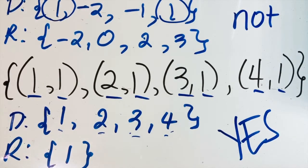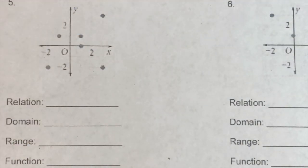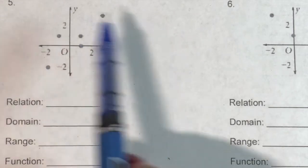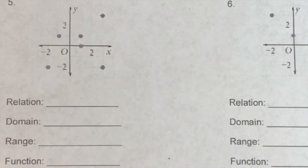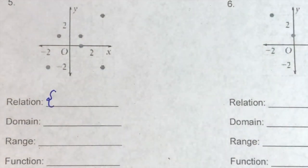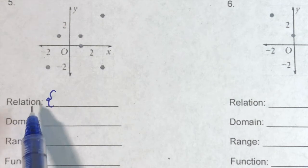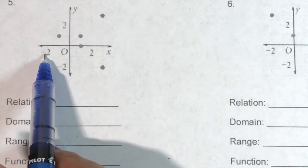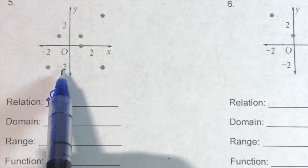For this example, we will write the relation, state the domain and range, and identify if the graph shows a function. To identify the relation, we get the ordered pair of each point. So this point is negative two, negative two.